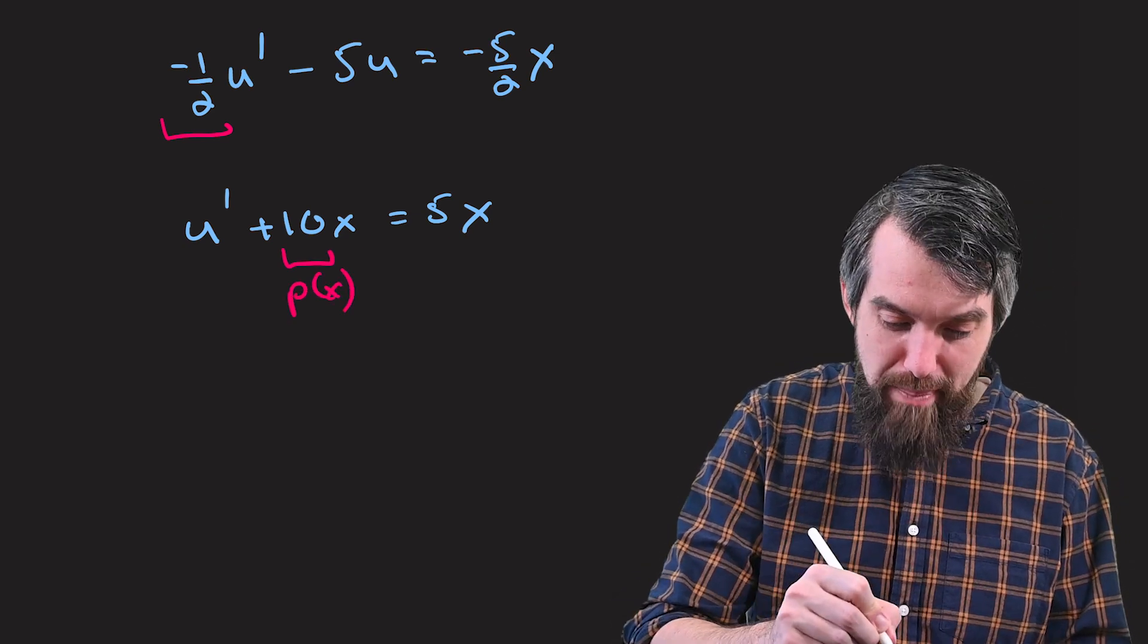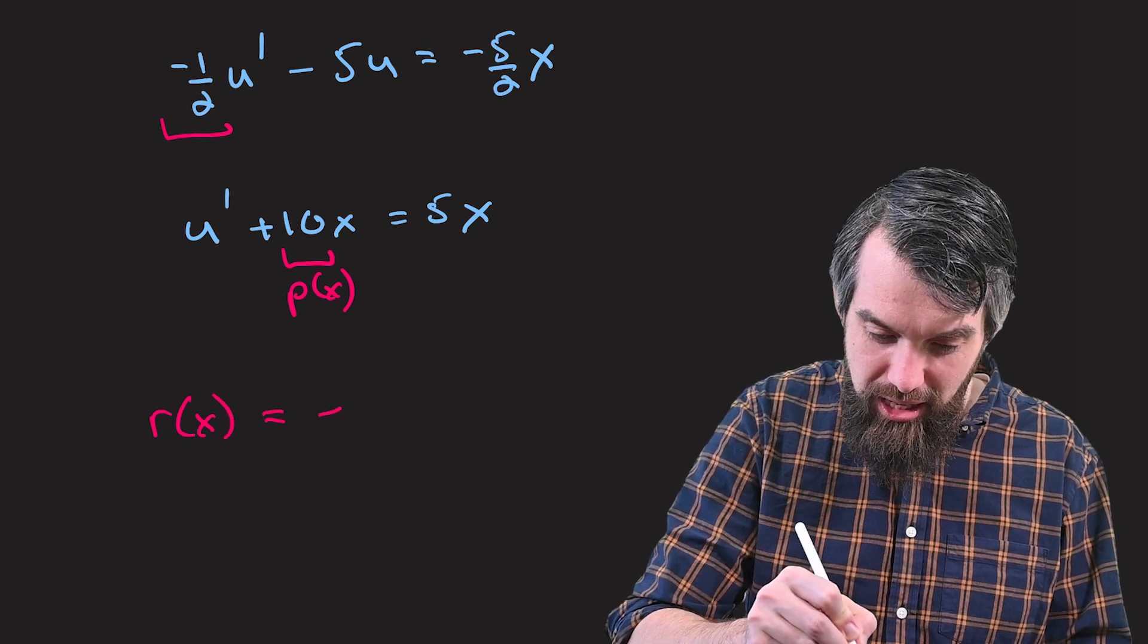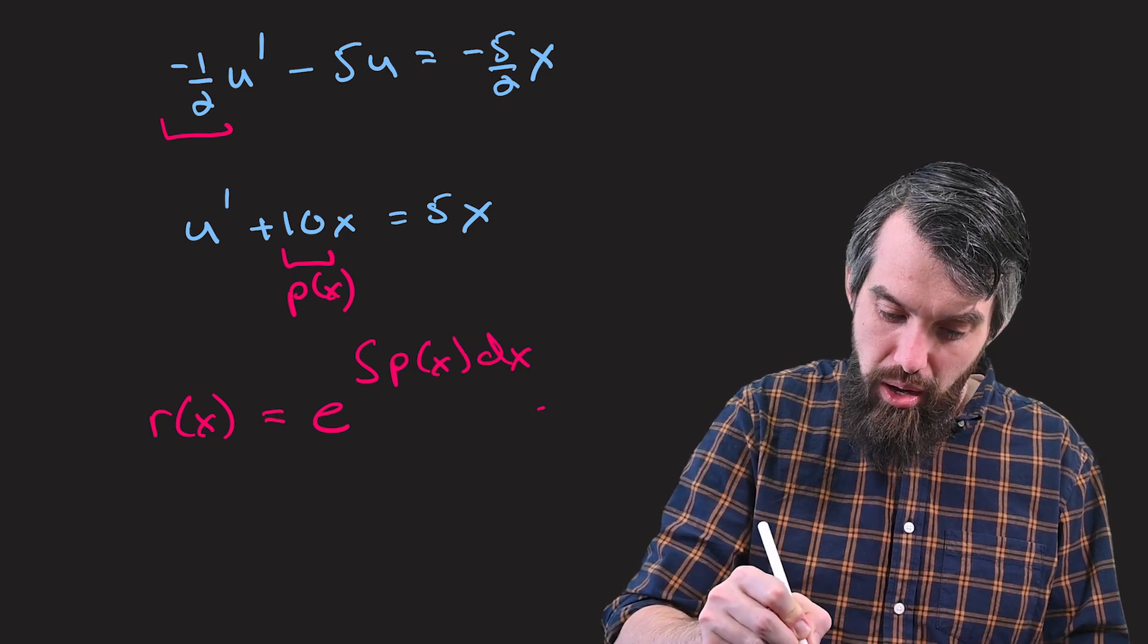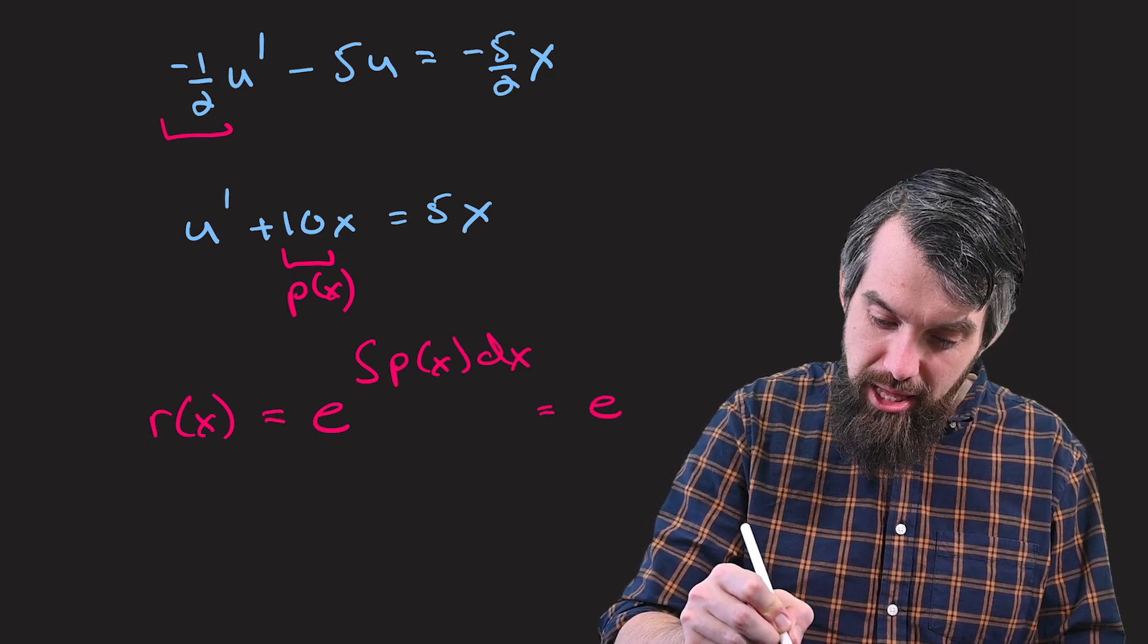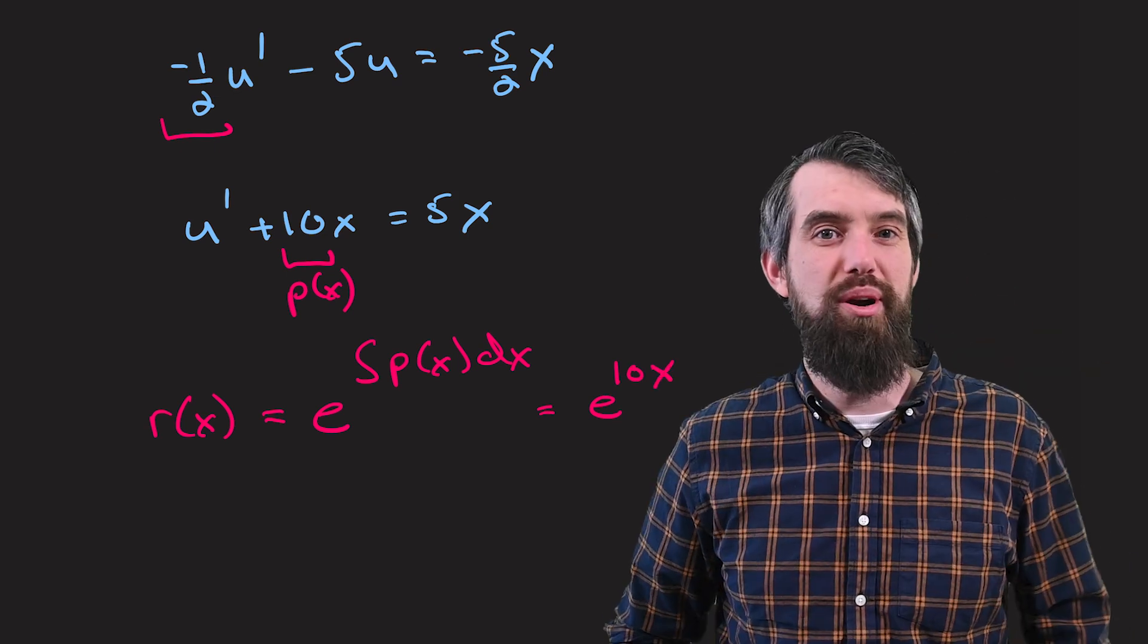And then I'm going to go and look at this. That is my p of x. And I use my p of x to get my integrating factor. Integrating factor is r of x is e to the power of the integral of p of x dx, which in this case is just going to be e to the power of 10x. And again, the plus c, I'll just arbitrarily set it to be 0.